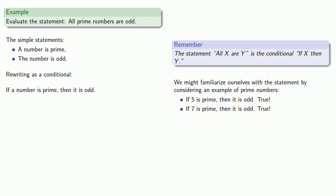How about the statement: if 9 is prime, then it is odd? Here our antecedent is actually false, so it doesn't really matter what our consequent is. In a conditional, if the antecedent is false, then the conditional itself is guaranteed true.